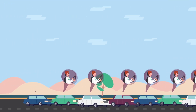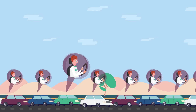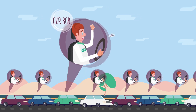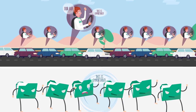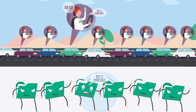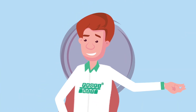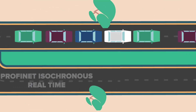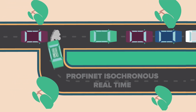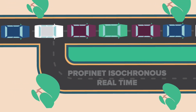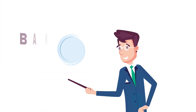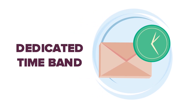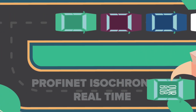Now imagine it's rush hour with many Bobs driving on the highway. Traffic may delay or obstruct our Bob's journey with his very important message. The same thing can happen on Ethernet — anybody can have access to it at any given time. But Bob has one more trick up his sleeve. For these critical messages, Bob can use the PROFINET HOV lane on the highway, known as PROFINET isochronous real time. It uses a concept called bandwidth reservation, where messages are given a dedicated time band on the network to guarantee their delivery.